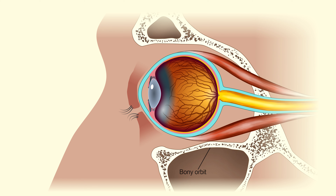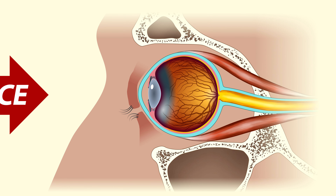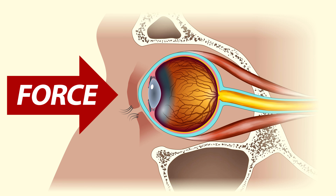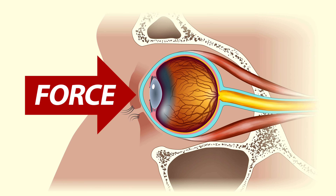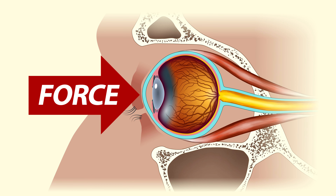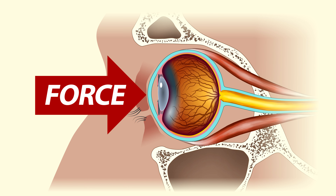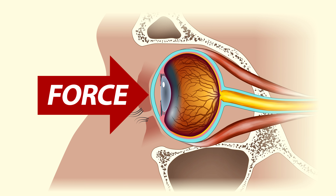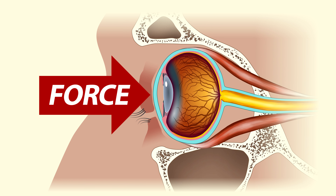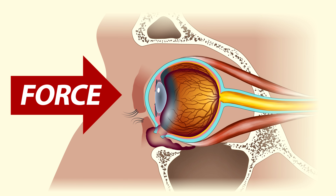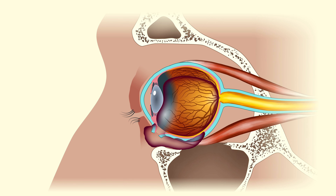That type of injury is known as a blowout fracture. It occurs when the eye is pushed back into the orbit and causes the pressure to rise so high in the orbit that the bony floor fractures.